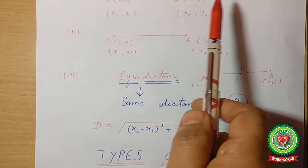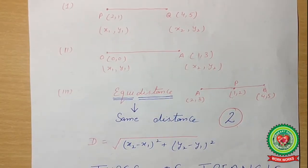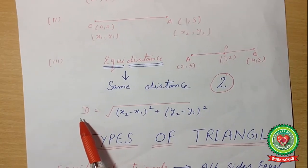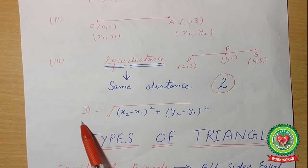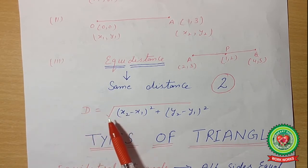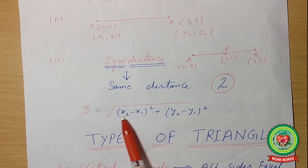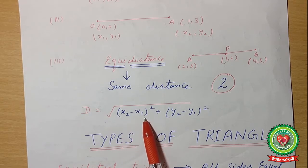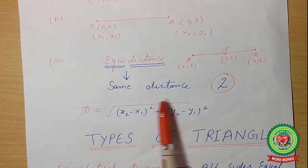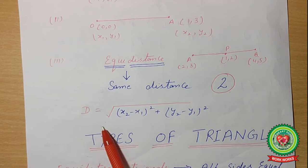All these topics are correlated with only one formula — the distance formula. The distance formula is: under root of (x2 minus x1) whole square plus (y2 minus y1) whole square.